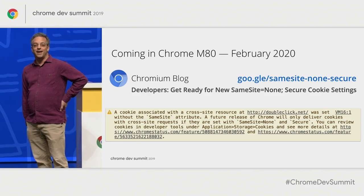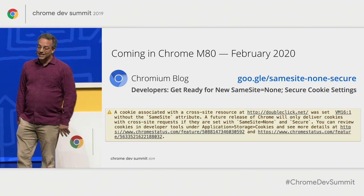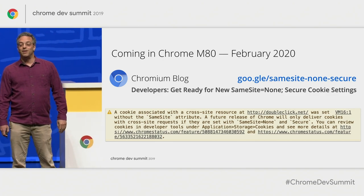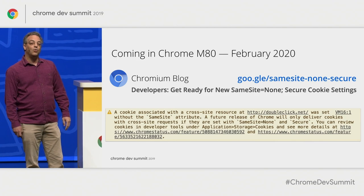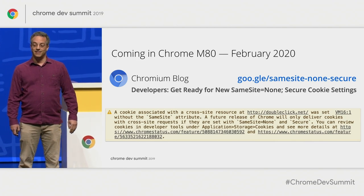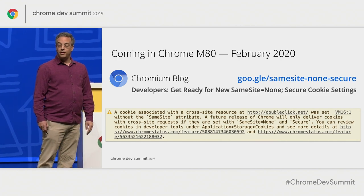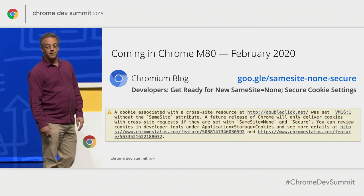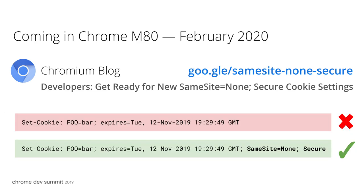Starting in Chrome M80—that's three months from now—if you set a cookie the way you've probably been doing it since the dawn of the web, that cookie will be available only in a first-party context. If you want that cookie when you're a third-party, you need to do something new: you will need to explicitly set it with the attributes SameSite=None and Secure.